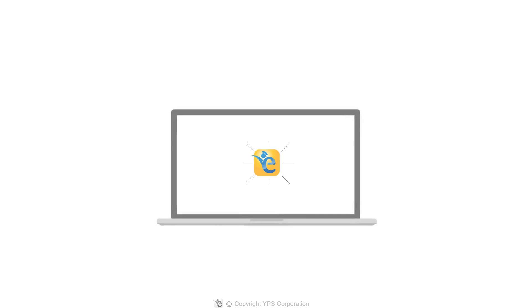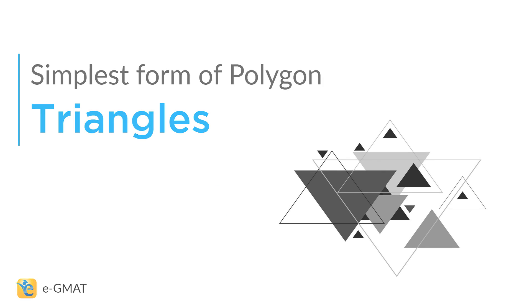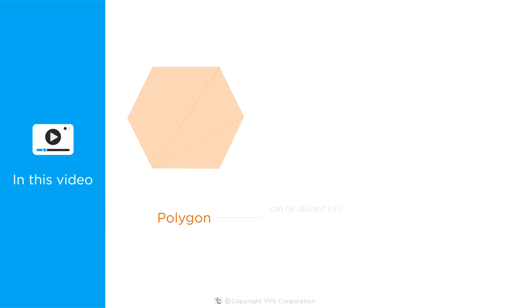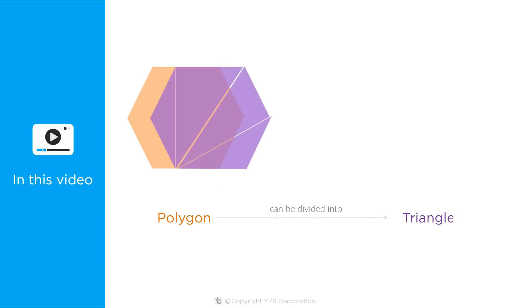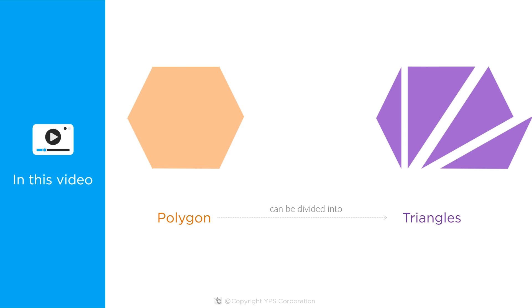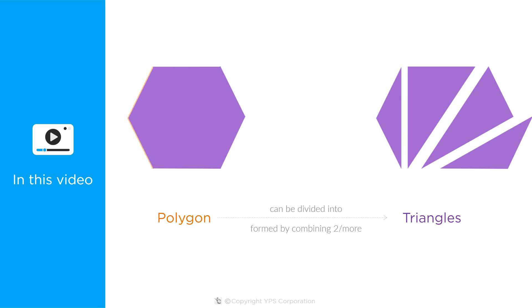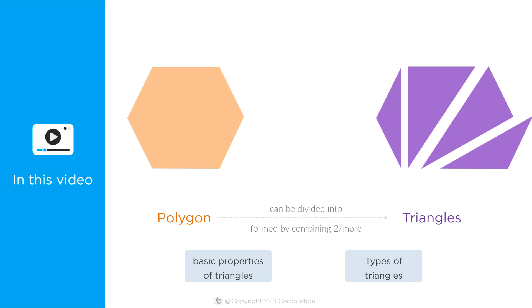In this video, we are going to talk about the simplest form of a polygon, a triangle. All polygons can be divided into triangles, or in other words, they are formed by combining two or more triangles. Thus, understanding the basic properties of triangles and their types is important.